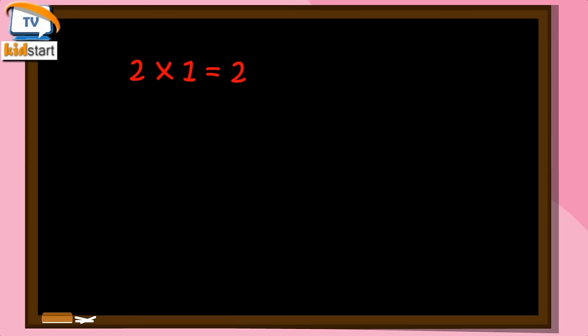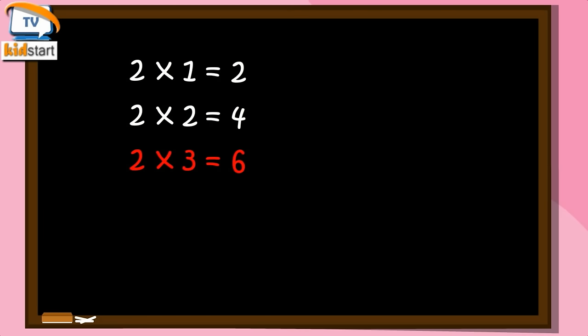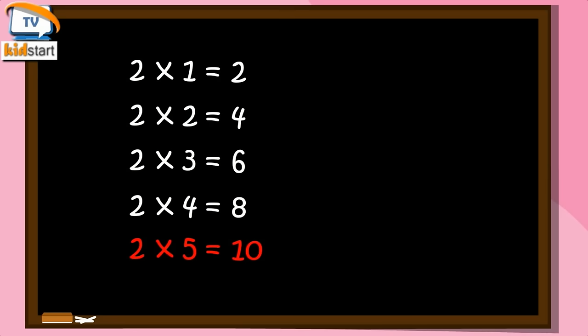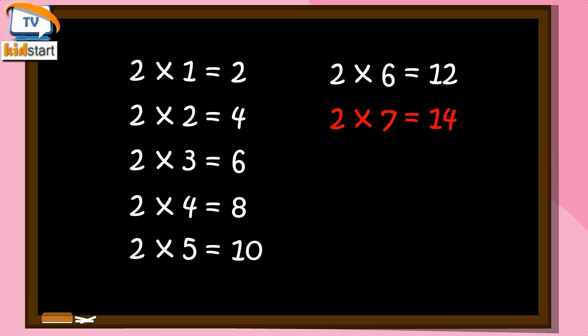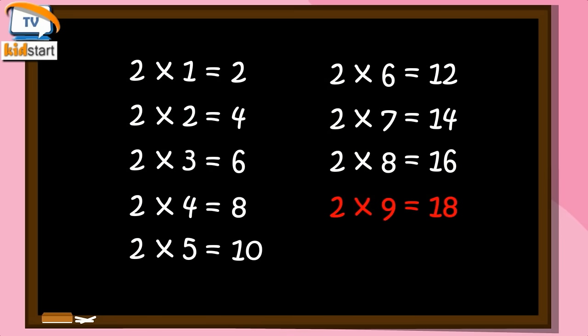Two ones are two. Two twos are four. Two threes are six. Two fours are eight. Two fives are ten. Two sixes are twelve. Two sevens are fourteen. Two eights are sixteen. Two nines are eighteen. Two tens are twenty.